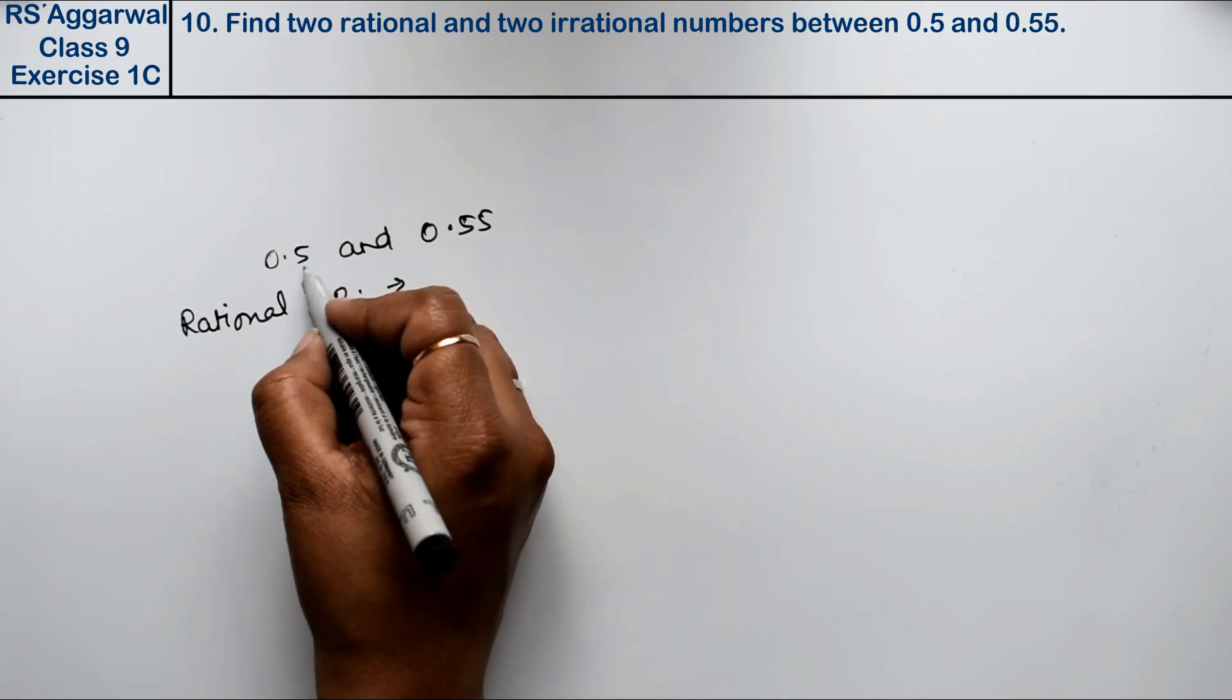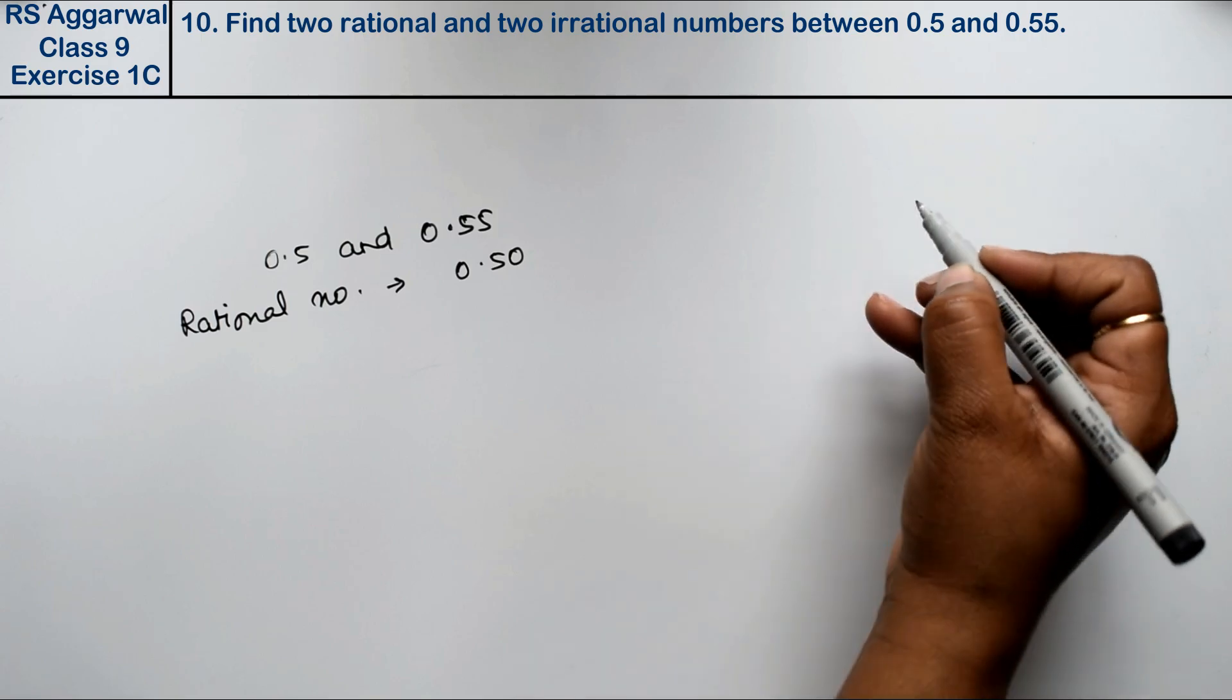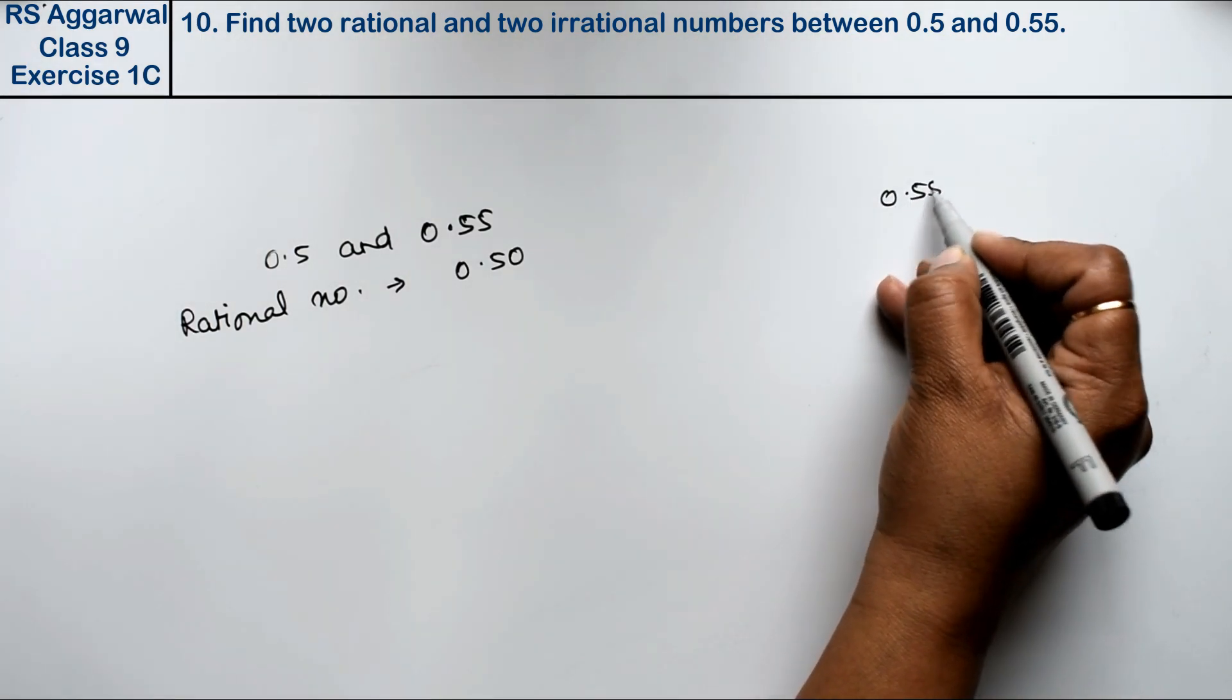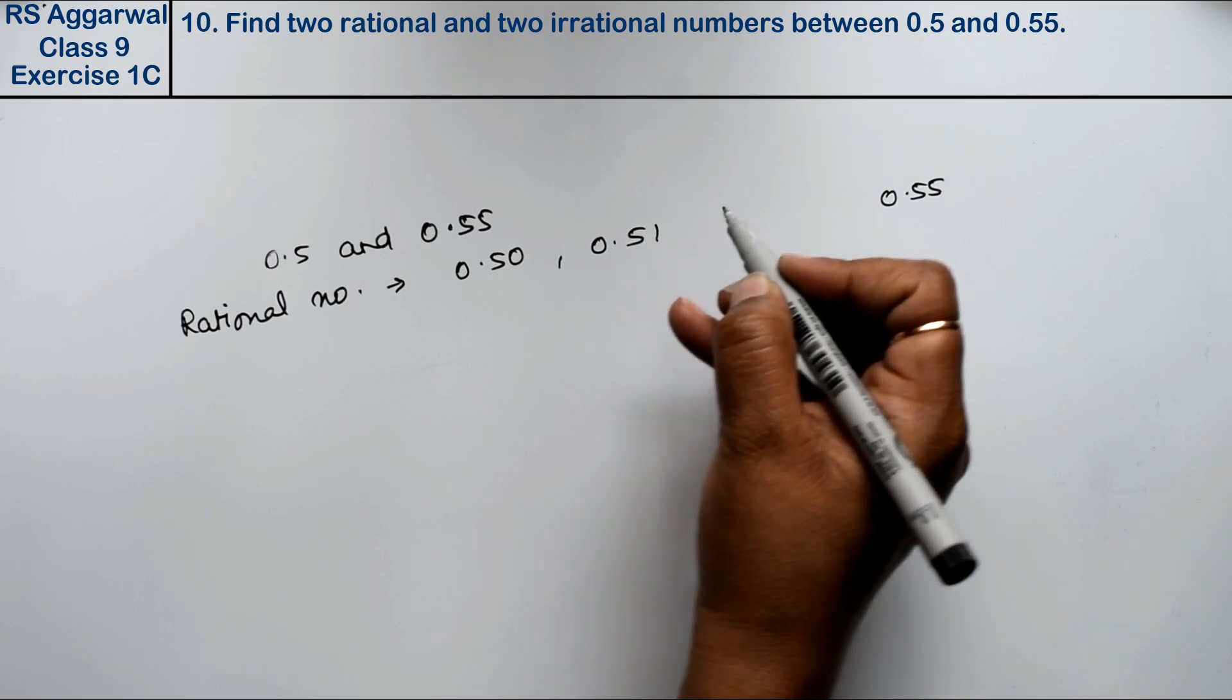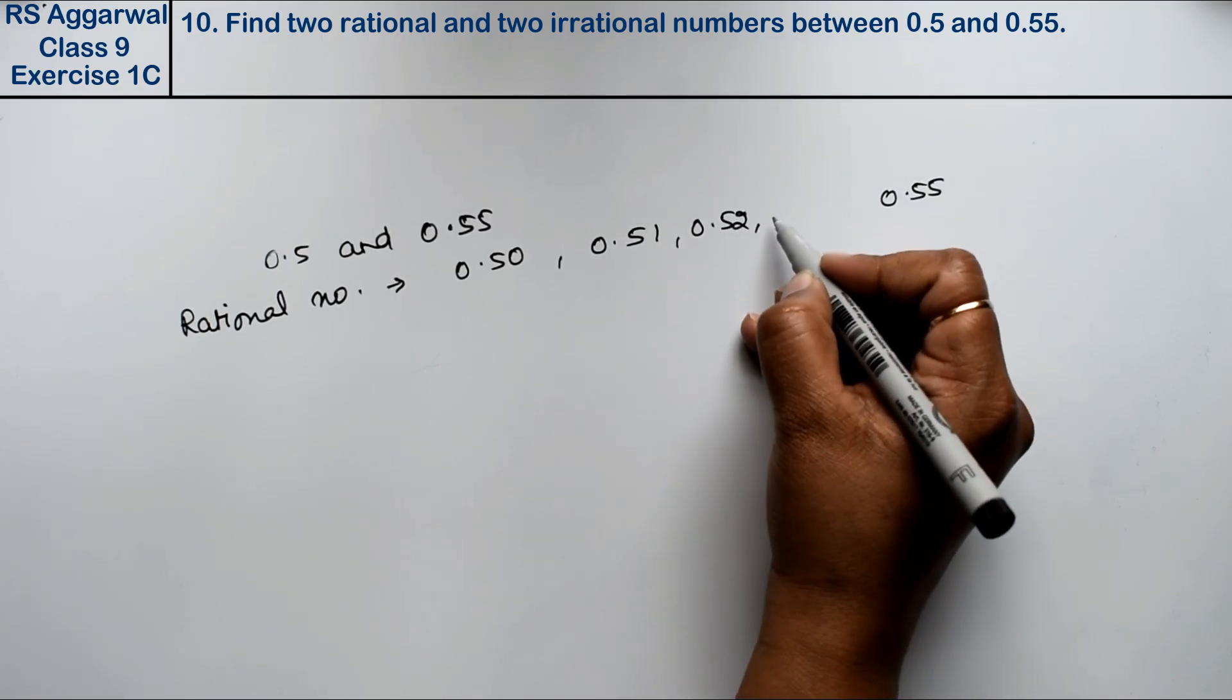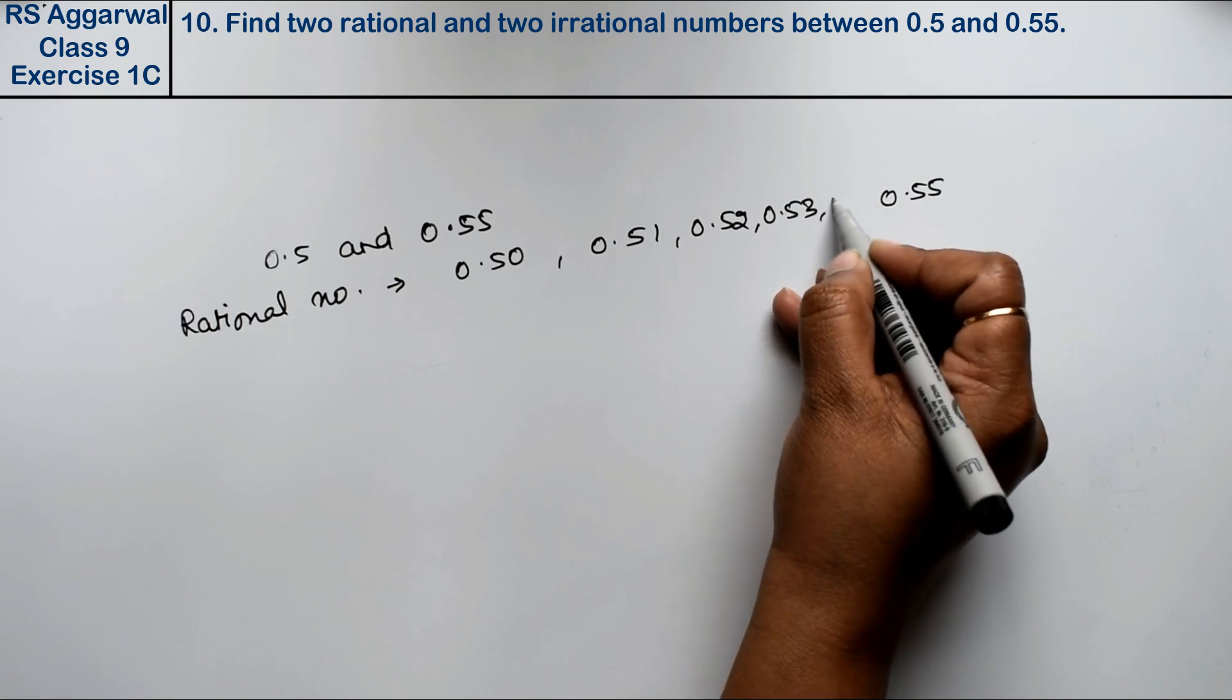You can see this is 0.50 and this is 0.55. To find rational numbers between them: it could be 0.51, it could be 0.52, it could be 0.53.